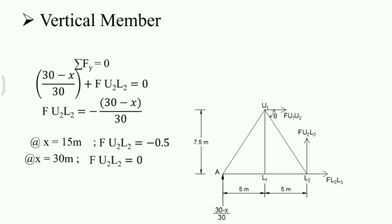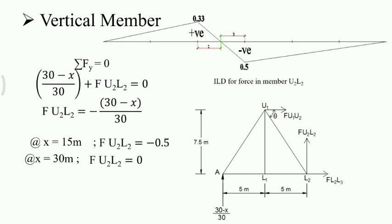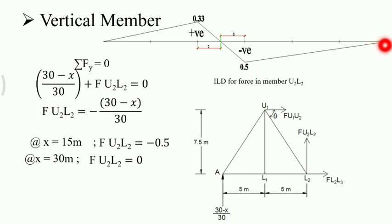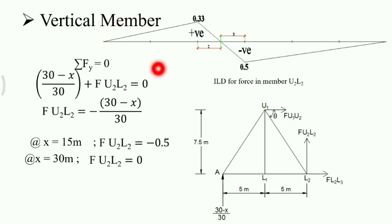We will draw the influence line diagram with respect to these ordinates. At x = 0, ordinate is 0; at x = 10 m, ordinate is 0.33; at x = 15 m, ordinate is −0.5; at x = 30 m, ordinate is 0. Some portion of the ILD is negative and some is positive. These intermediate values are obtained by similarity of triangles, giving a distance of 2 m and 3 m respectively.